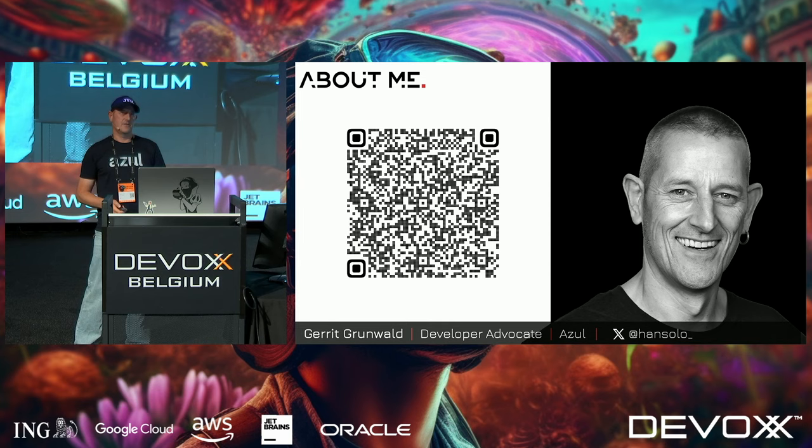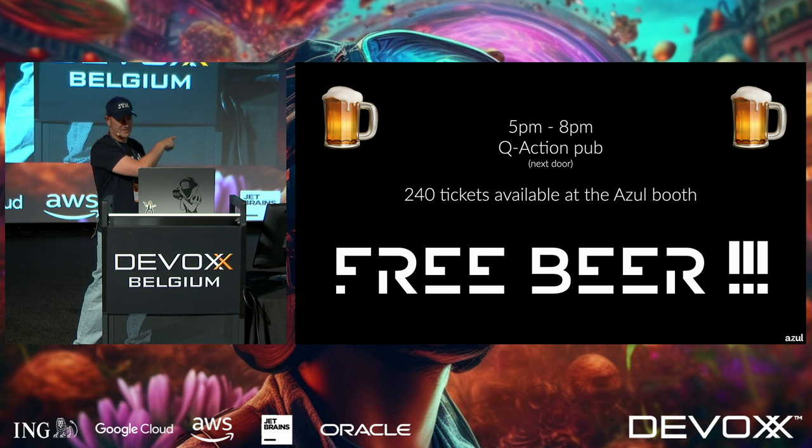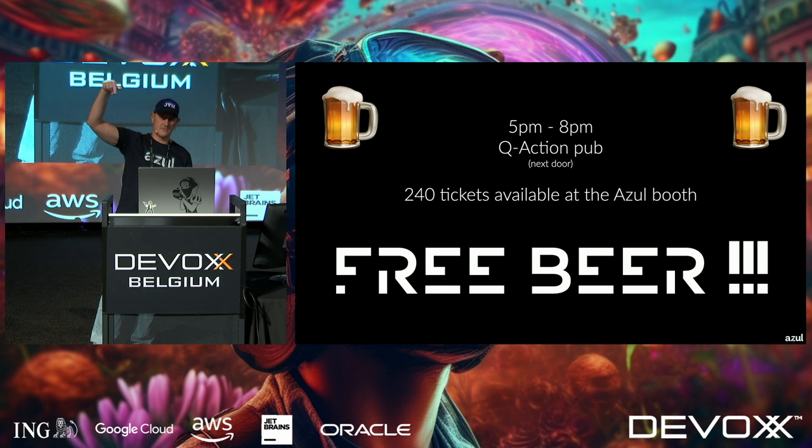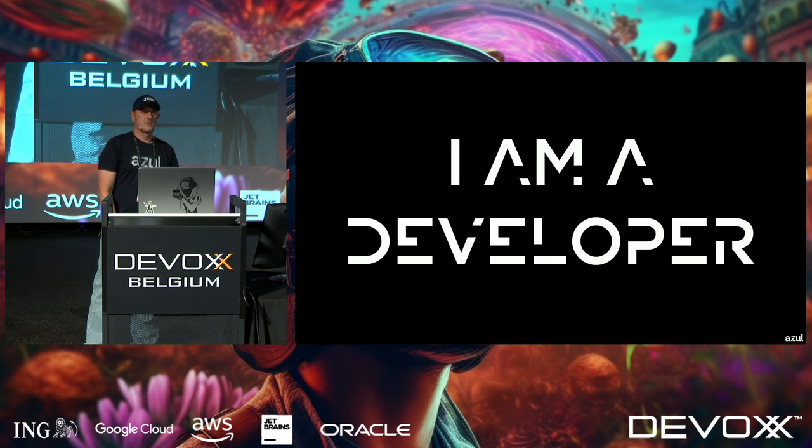Before we start, one important thing: free beer! You go to our booth, sign up for tickets — we have 240 — and you can head to the Queue Action Pub from 5 to 8, where there's a party with drinks and food. You just have to register.